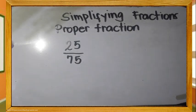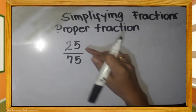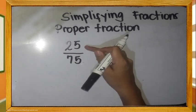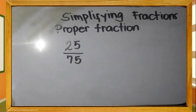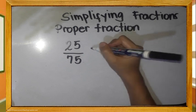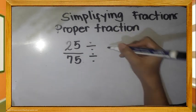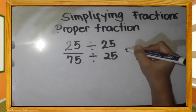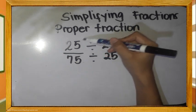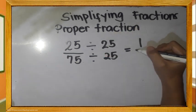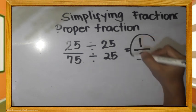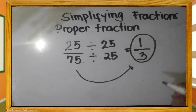Isa pang halimbawa, simplify natin ang 25 over 75. Mag-isip ng numero na pwedeng i-divide sa 25 at sa 75. Ang sagot ay 25. I-divide ang numerator at ang denominator sa 25. Kaya, 25 divided by 25 is one. 75 divided by 25 is three. Ang simplest form ng 25 over 75 ay one-third.